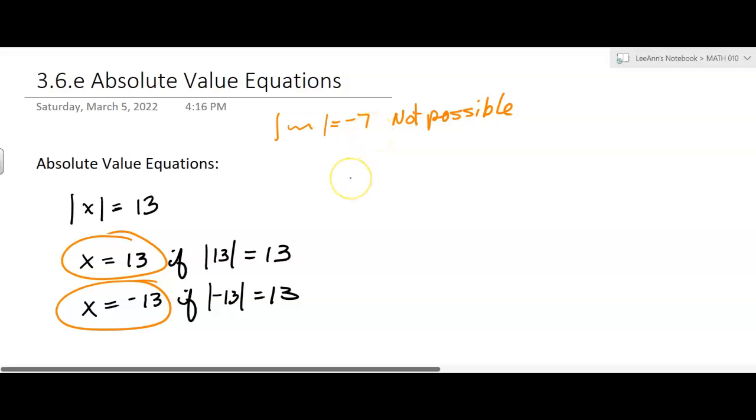So what if you have a more complicated one? What if you have the absolute value of 2x plus 3 equals 13?